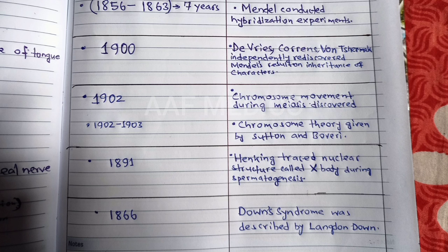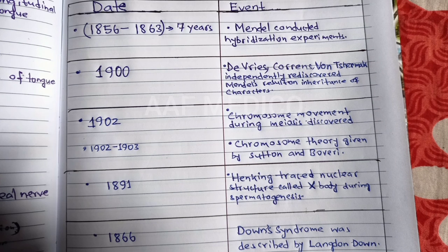The next date was 1891. In the year, a specific nuclear structure called X-Body was traced by Henking during spermatogenesis, which describes 50% characters all received and the other 50% characters were not received.